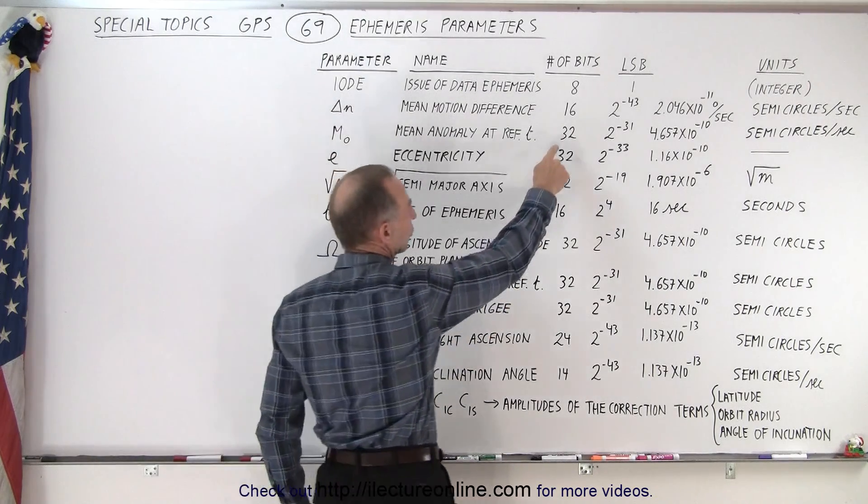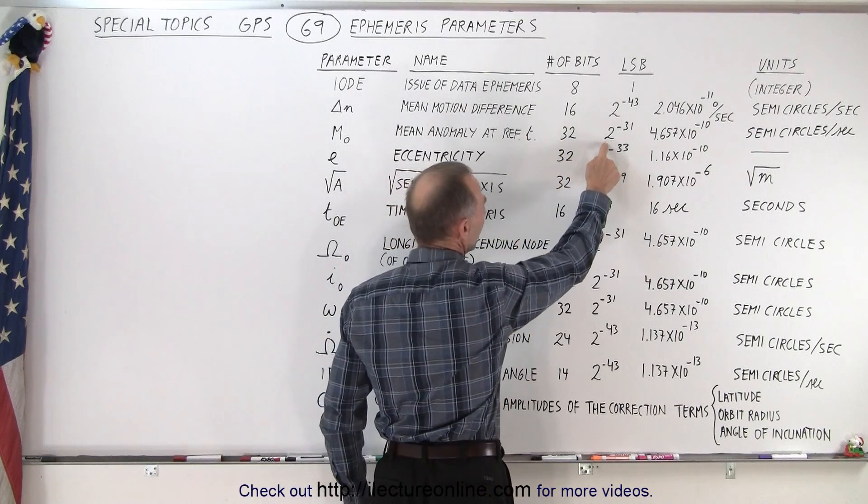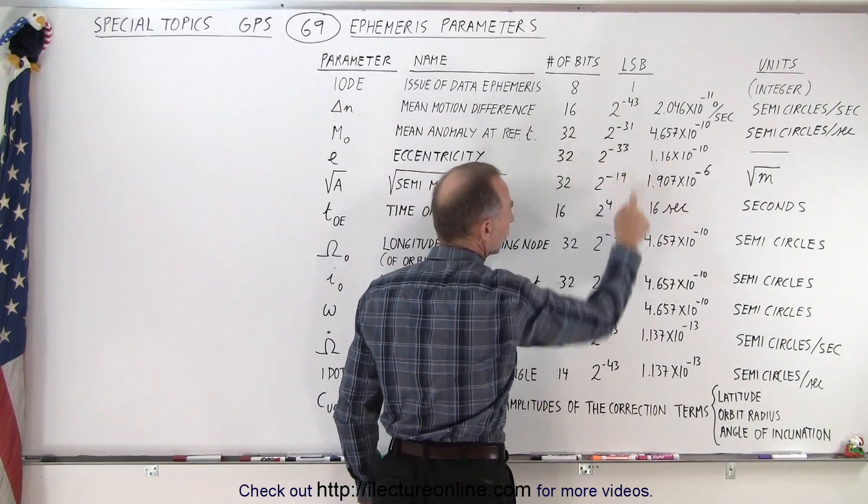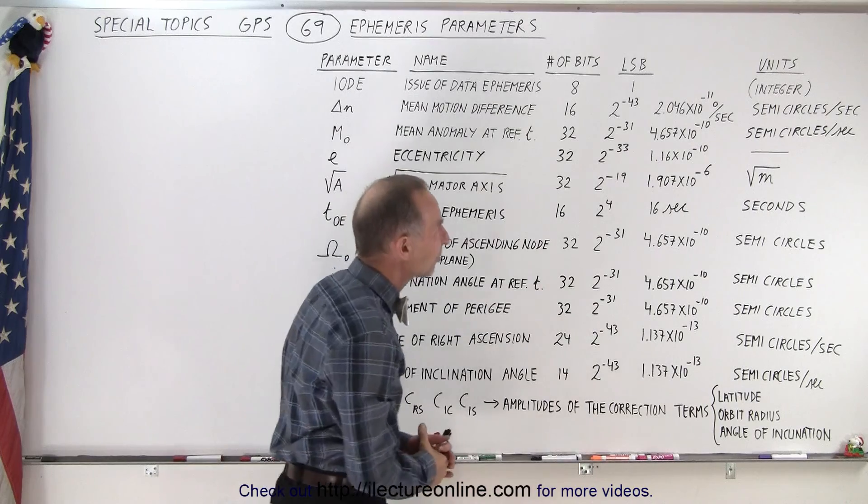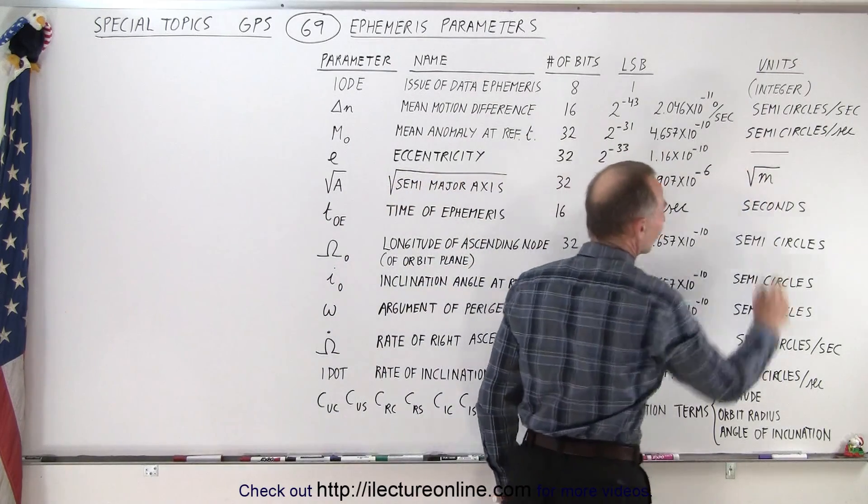It gives you a fraction of the period of one complete orbit around the earth. Notice that there's 32 bits associated with that. The smallest bit LSB is 2 to the minus 30 which is 4 times 10 to the minus 10 semicircles per second.